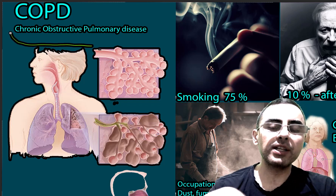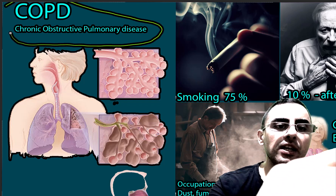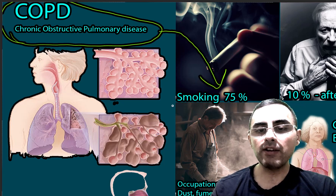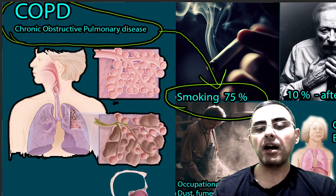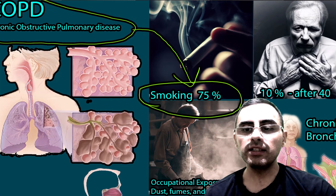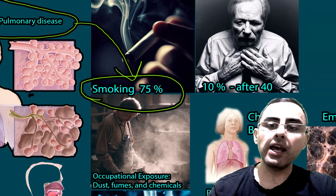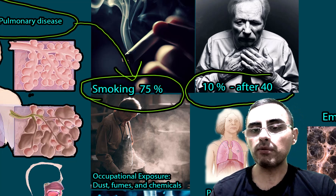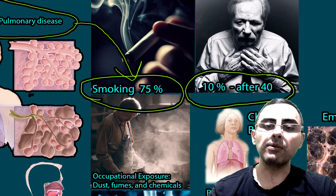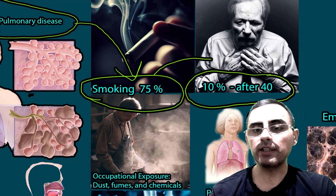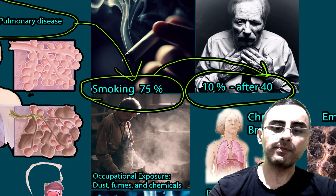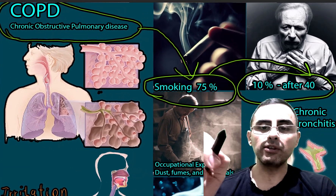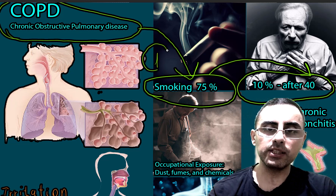COPD is chronic obstructive pulmonary disease. It usually affects smokers — 75 percent of COPD cases are due to smoking, that's how important it is. COPD affects 10 percent of the world population after age 40, so it usually affects adults over 40.